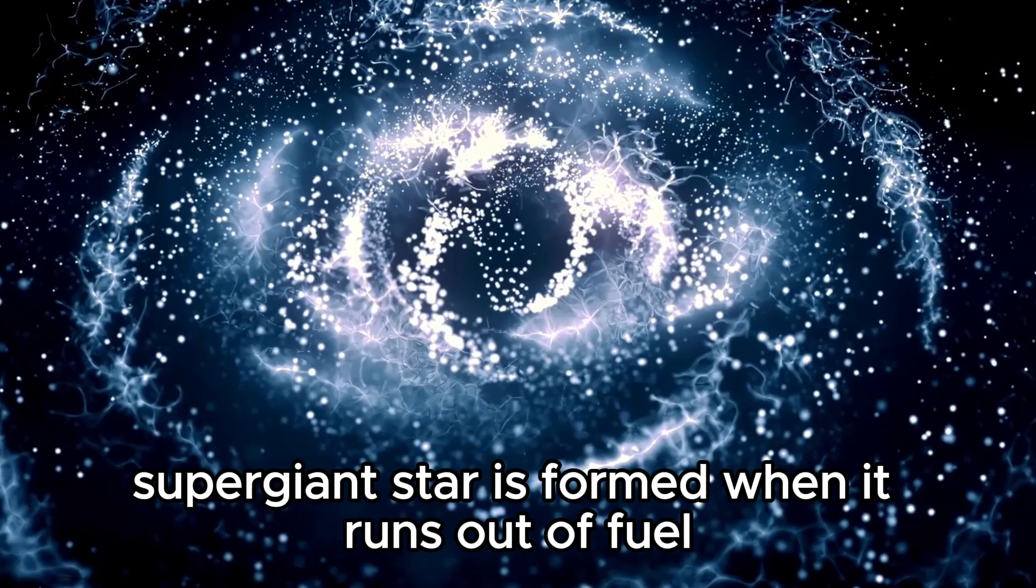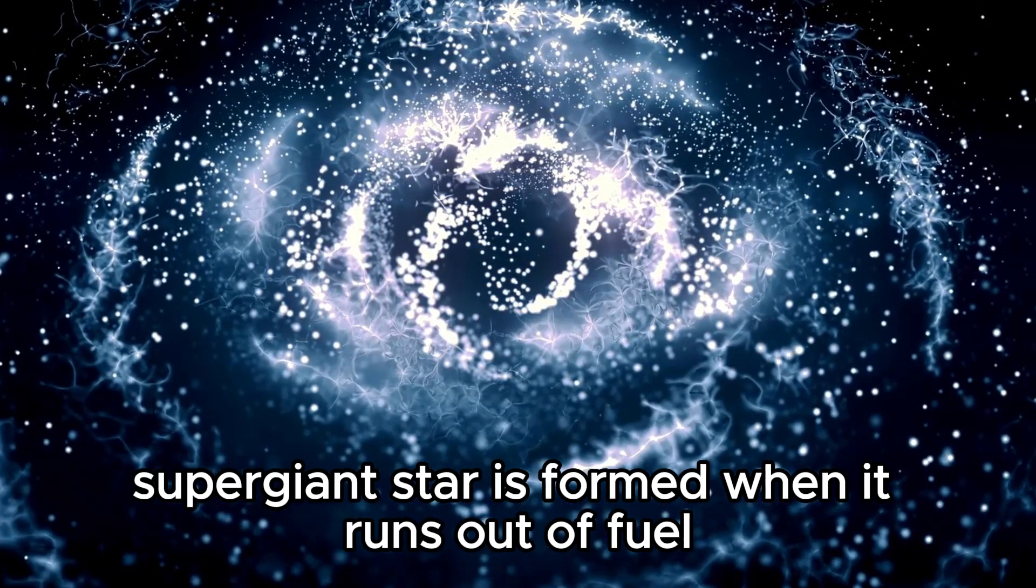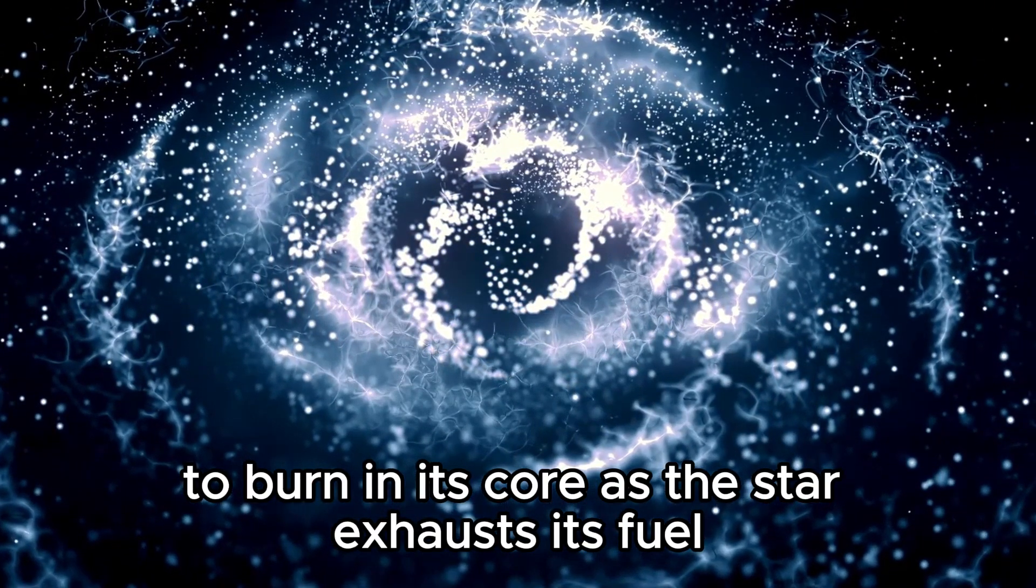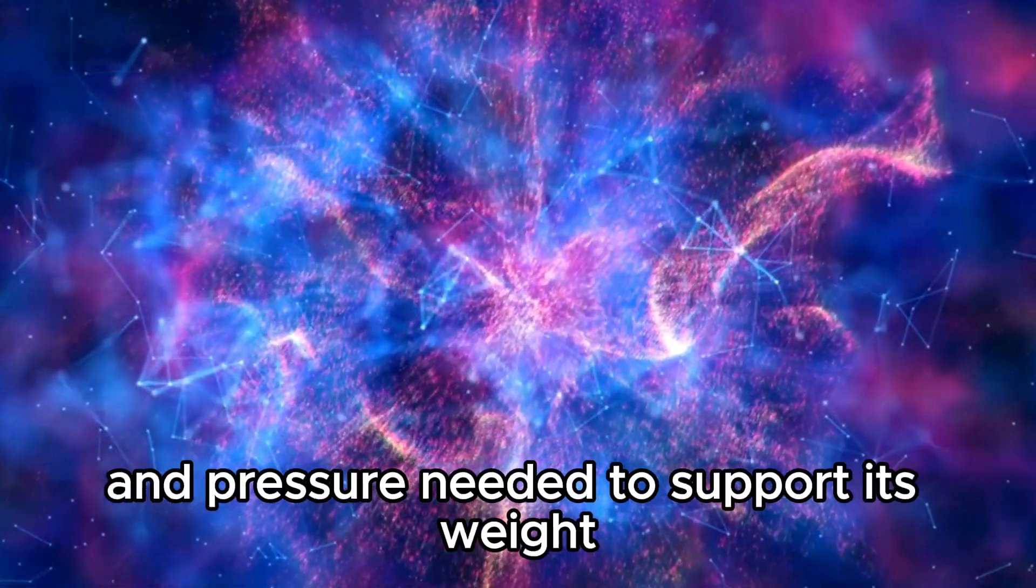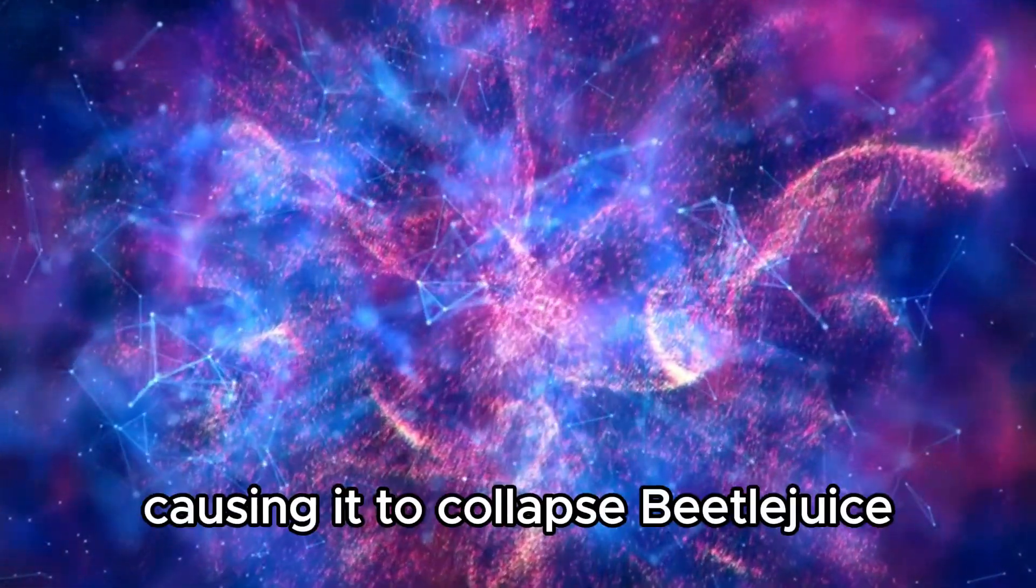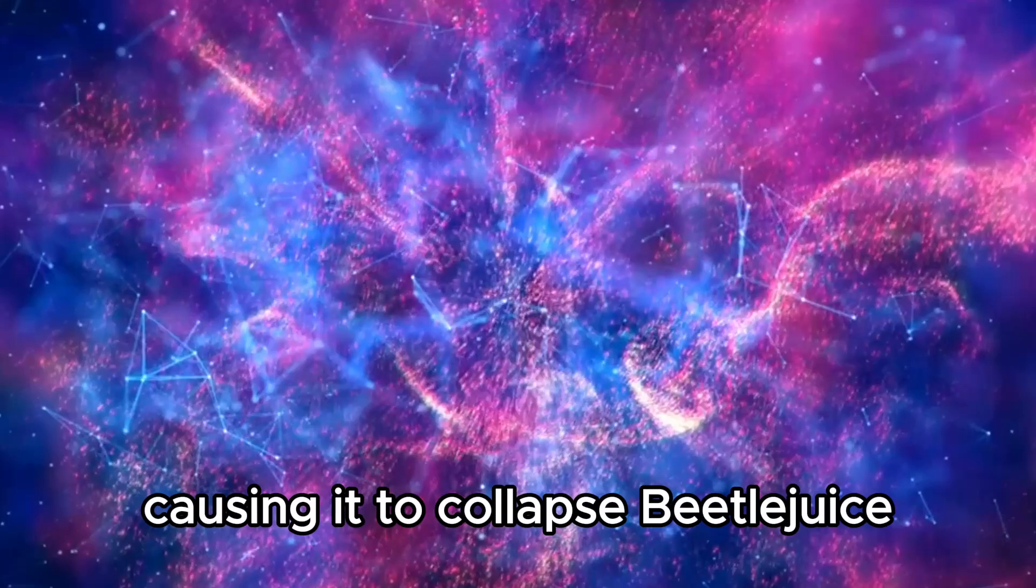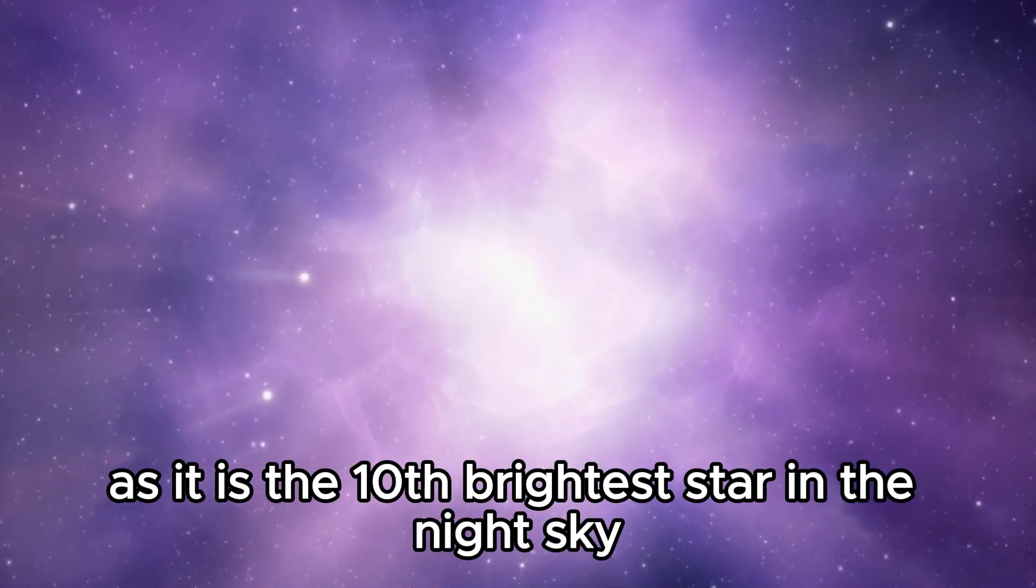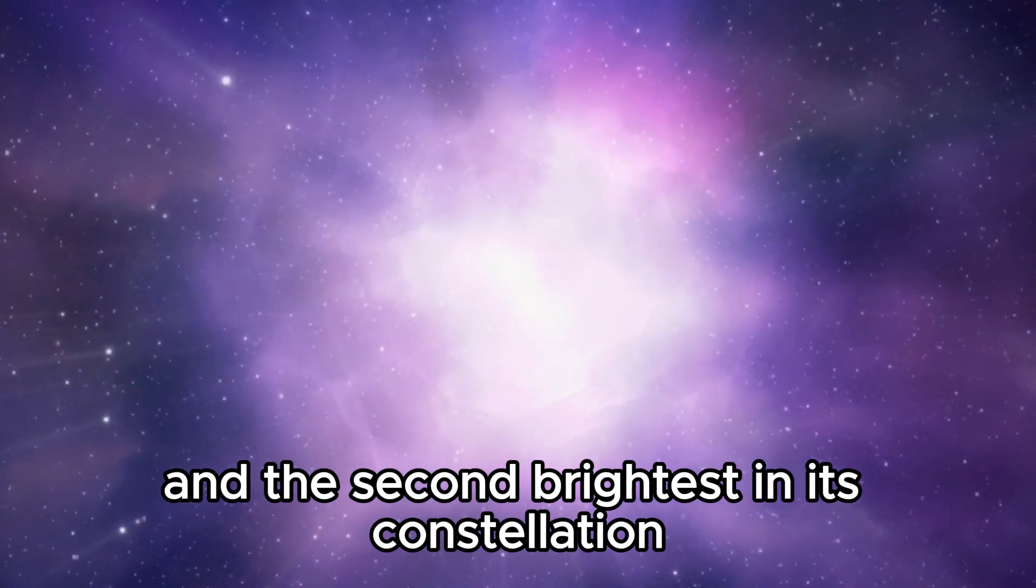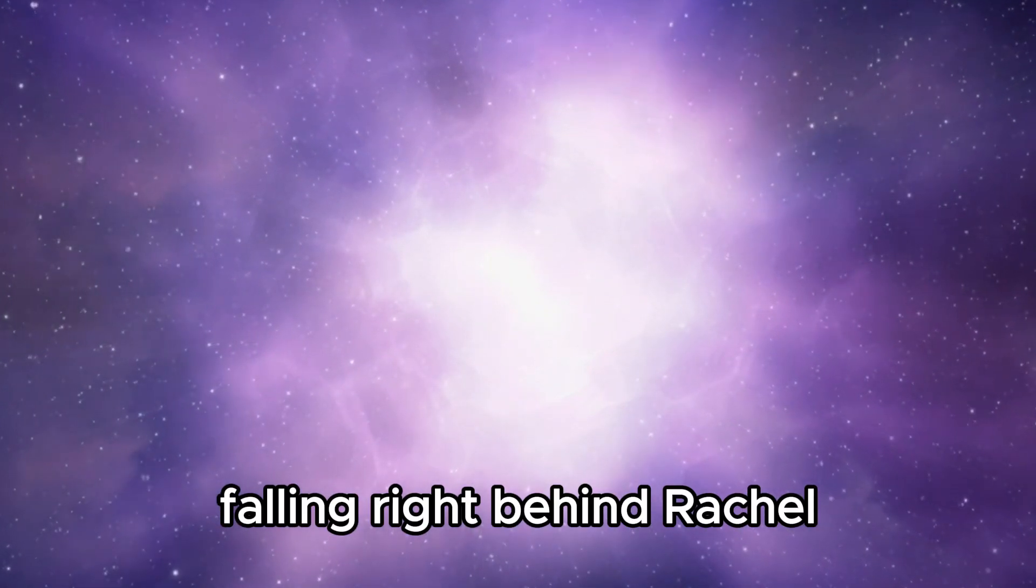A red supergiant star is formed when it runs out of fuel to burn in its core. As the star exhausts its fuel, it can no longer create the heat and pressure needed to support its weight, causing it to collapse. Betelgeuse's amazing personality extends to its brightness as it is the 10th brightest star in the night sky and the second brightest in its constellation, falling right behind Rigel.